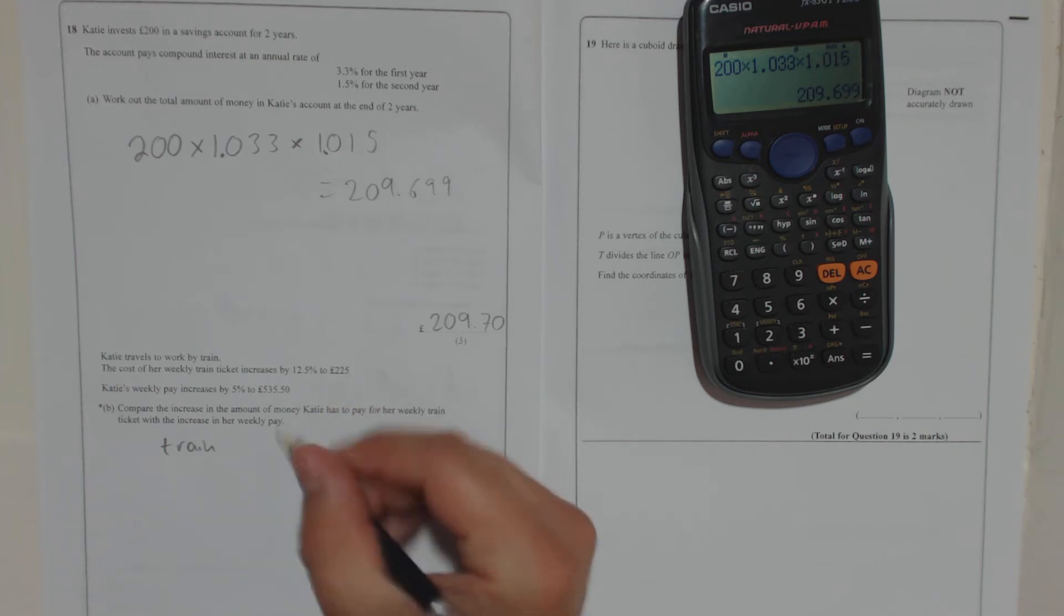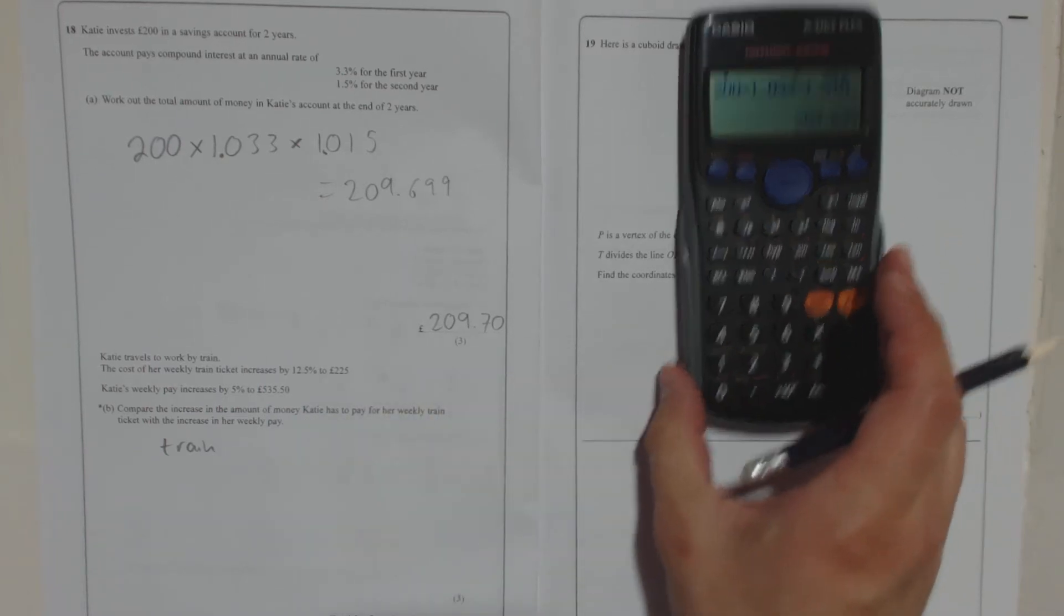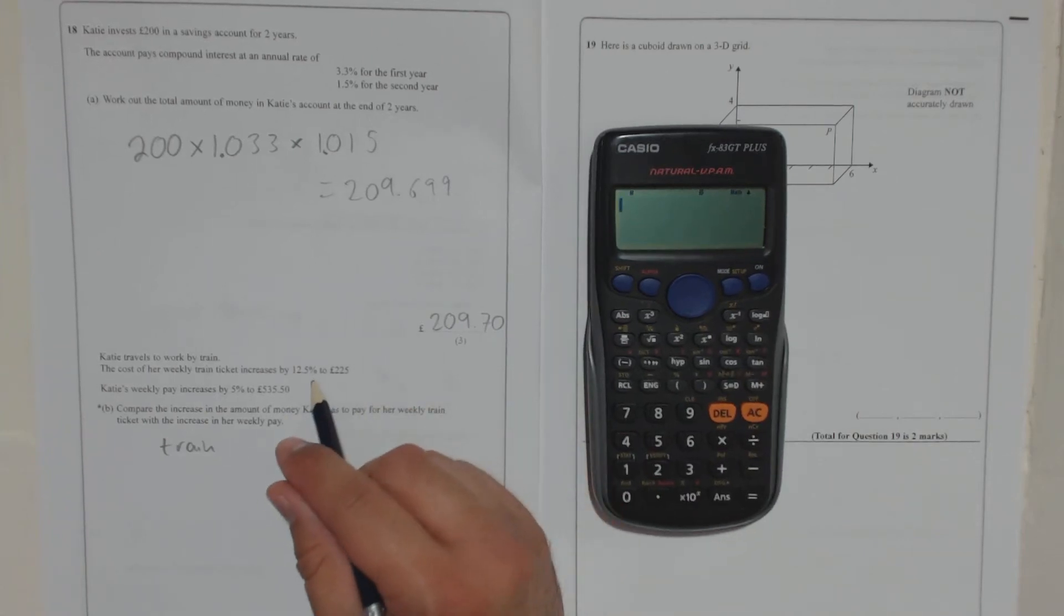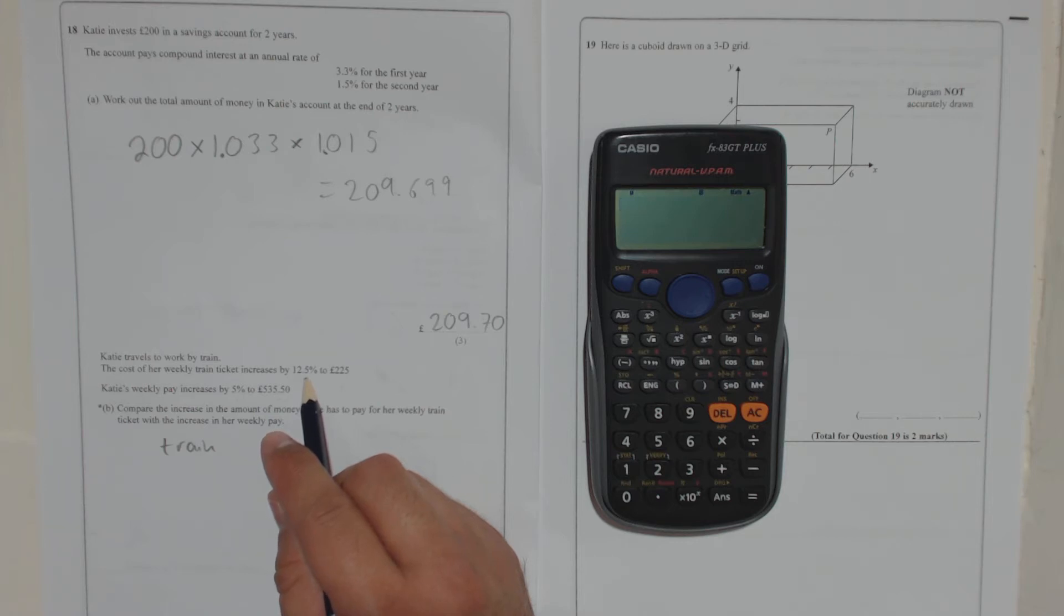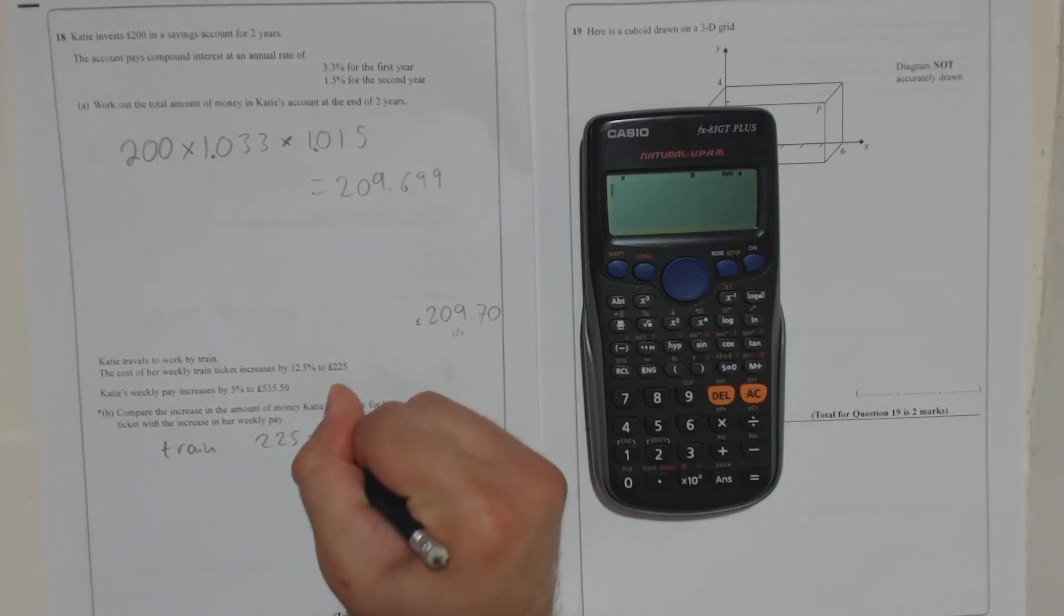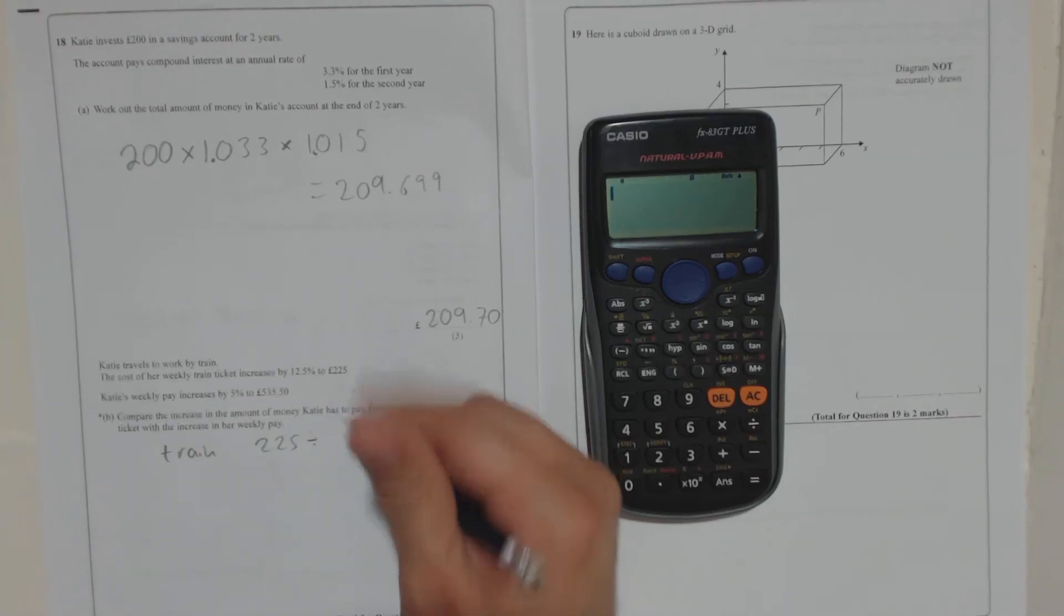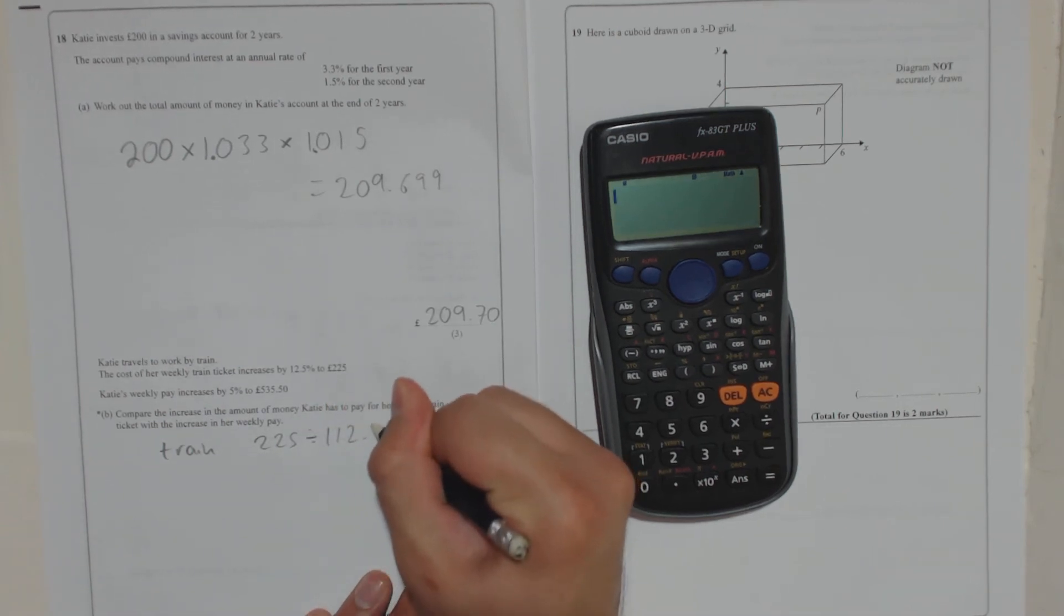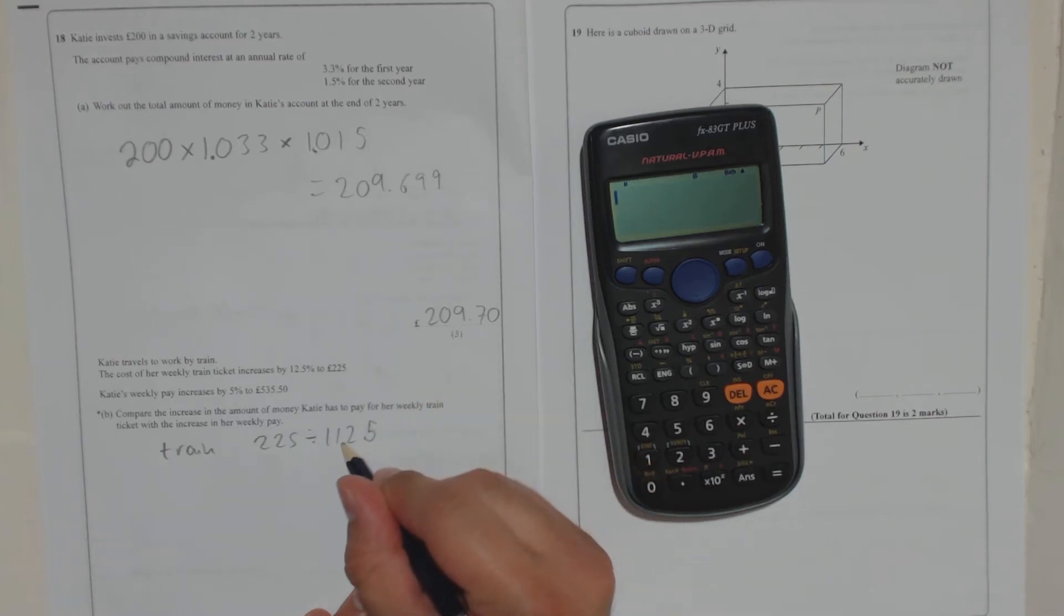So to find what she used to get, what we need to do is, now whatever it used to cost, it was increased by 12.5%. So that means it was multiplied by a number to get 225. So what we're going to do is I'm going to take 225 and I'm going to divide by, it would have been 100 plus 12.5, which is 112.5, but then it would have been divided by 100 to get that.